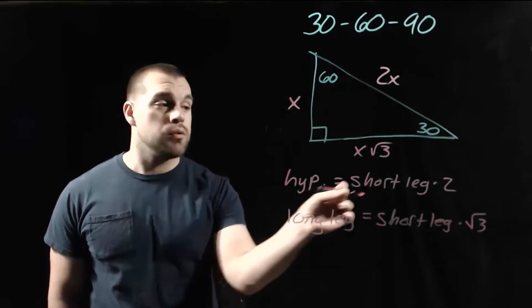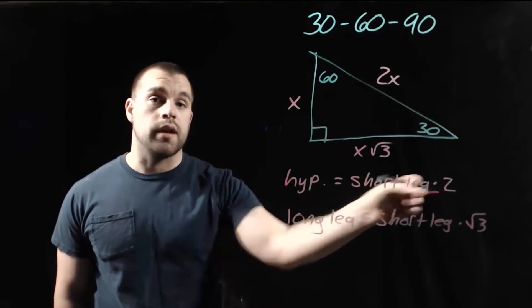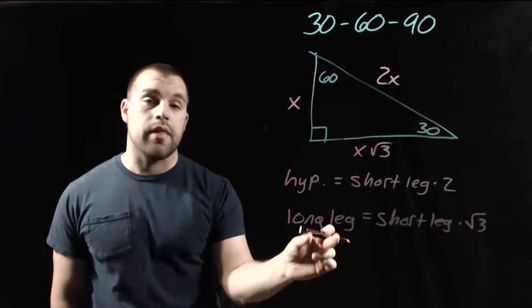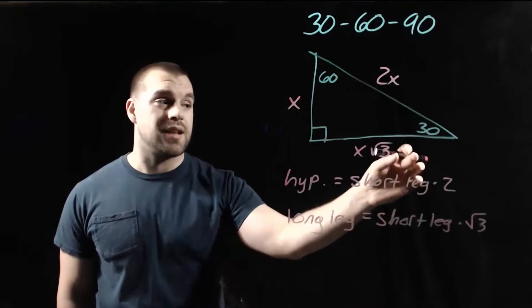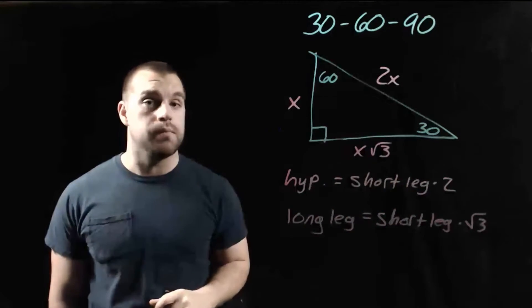So again, the hypotenuse is the short leg times 2, and the long leg is the short leg times the square root of 3.